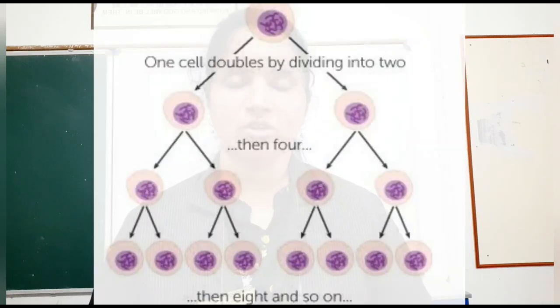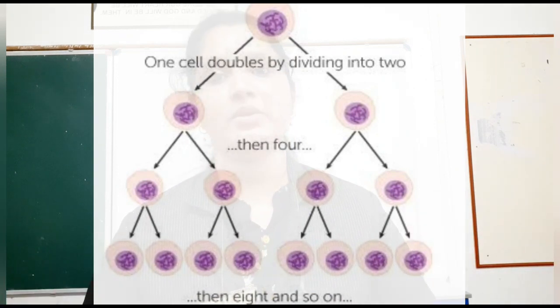Tissues are a group of similar cells that have a common origin and perform specific functions. Each tissue has a common origin — that is, you know, each cell divides also, and that is why a group of cells is formed. One cell divides into many cells. So, each tissue has a common origin — a common one cell divides repeatedly to form millions of cells, which combine together to perform a specific function.